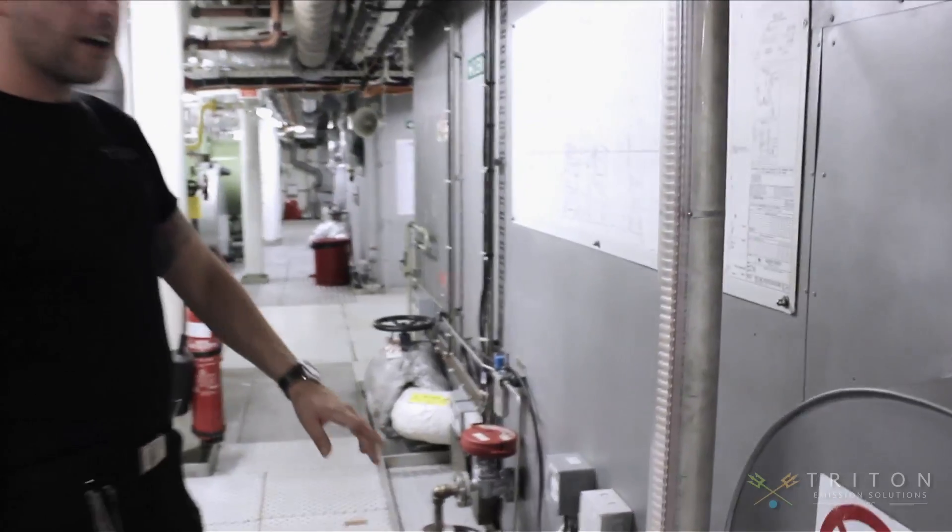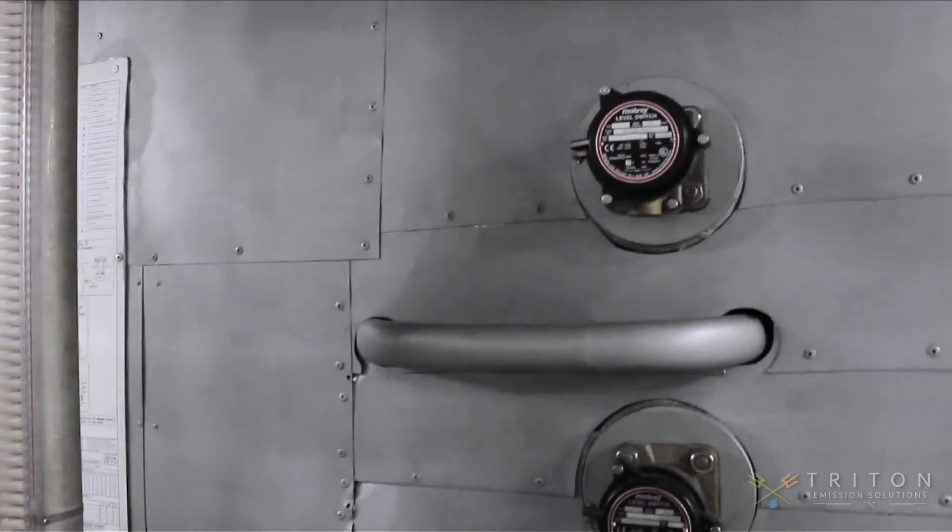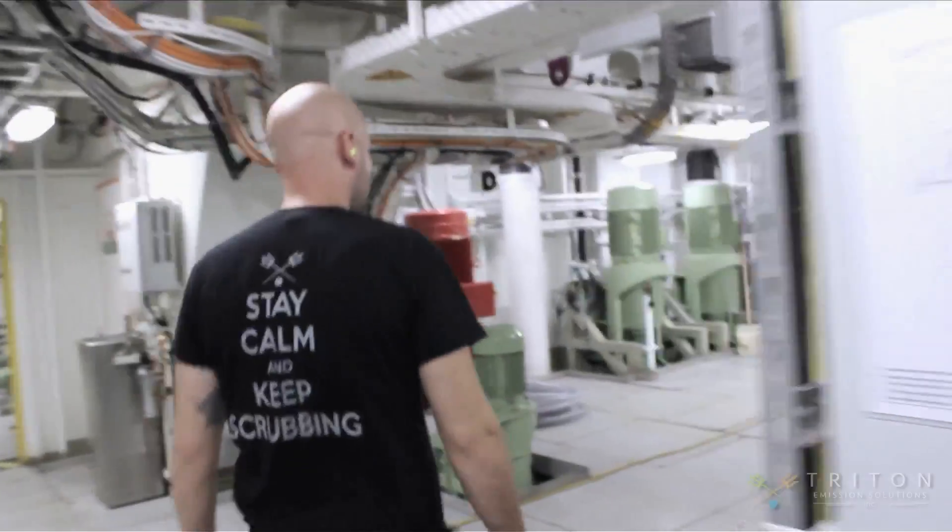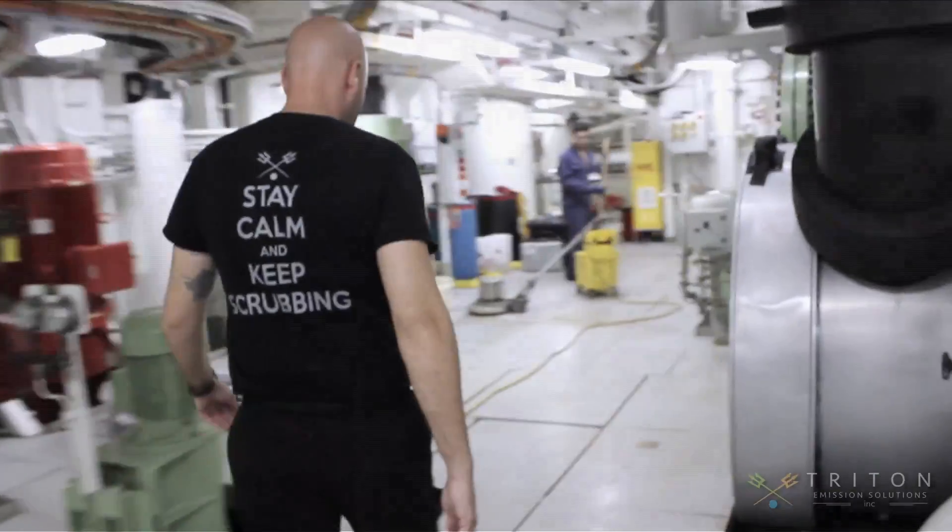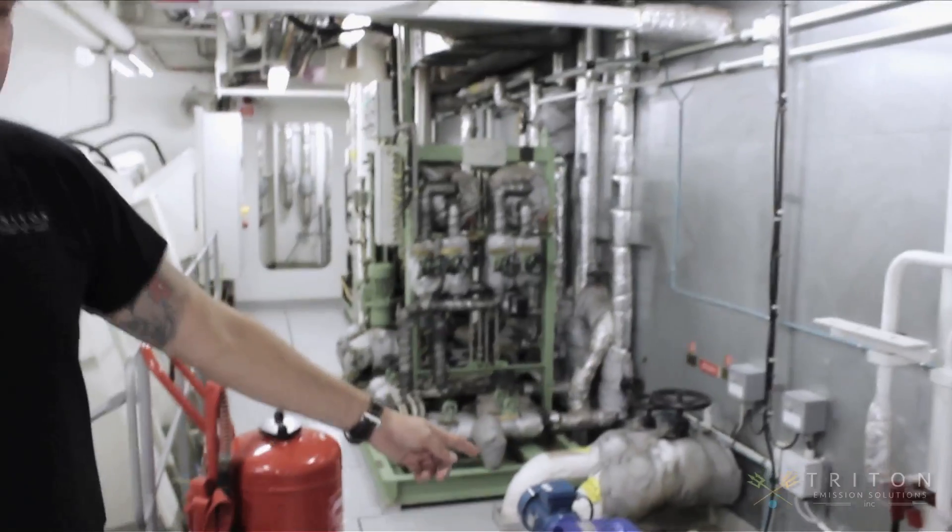High sulfur fuel oil is pulled from the ship's existing settling tank. An oil feed pump sends the high sulfur fuel through heaters and our patented D-Sox emulsification tubes where charged process water is injected under high pressures creating an emulsion and chemical reaction.